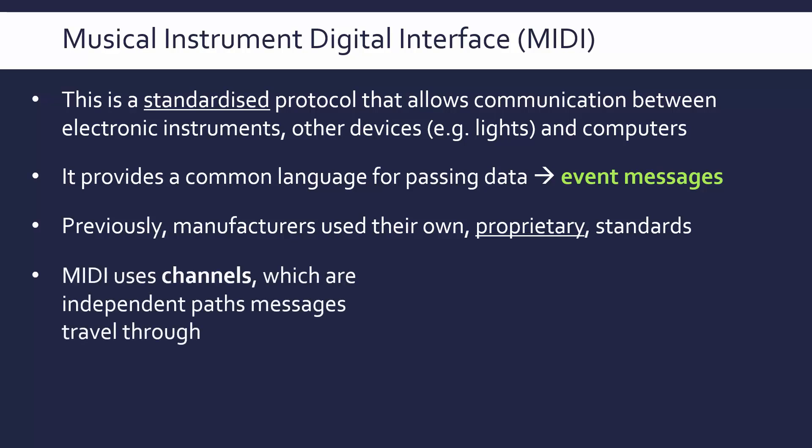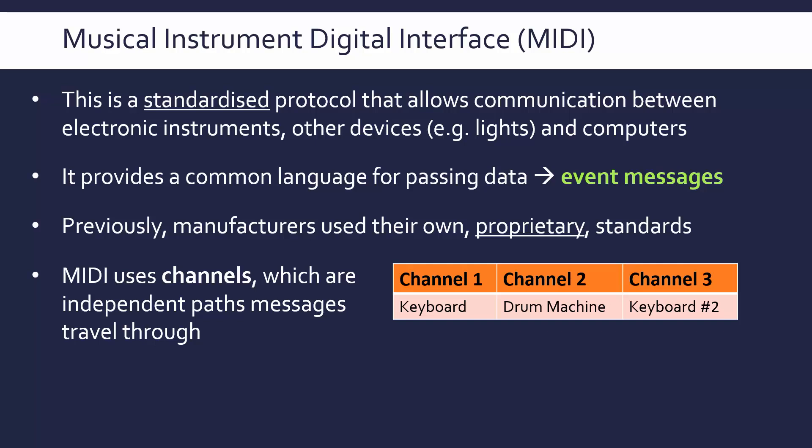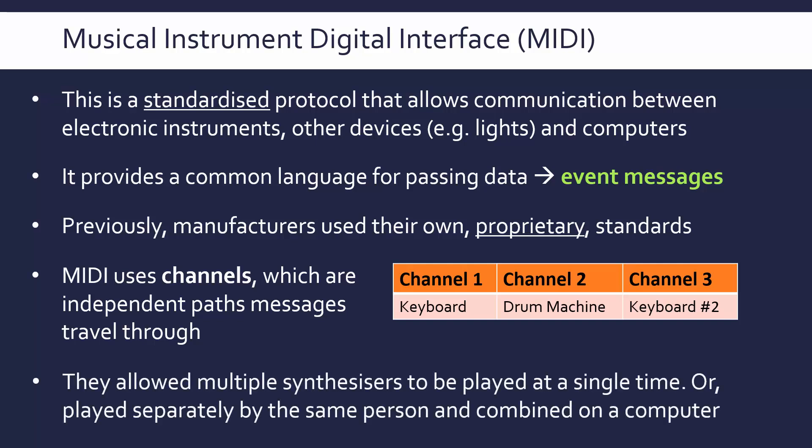An important aspect of how MIDI was designed is that it uses channels — independent paths through which messages can travel. Event messages can go through different channels, up to 16. So, for example, if we've got a keyboard, a drum machine, and a second keyboard, each can have messages travelling through different channels, each one independent. These channels enable people to play different instruments and synthesizers at the same time.